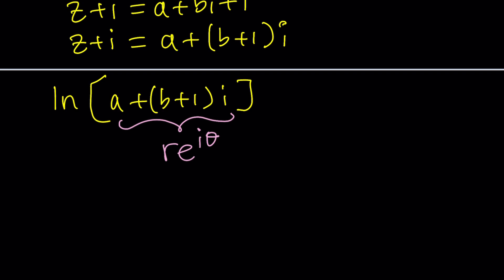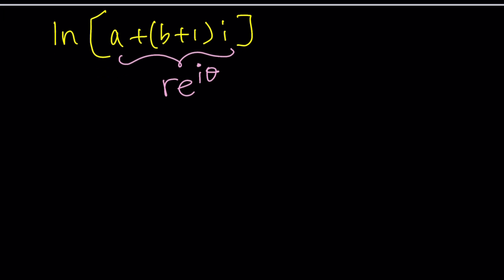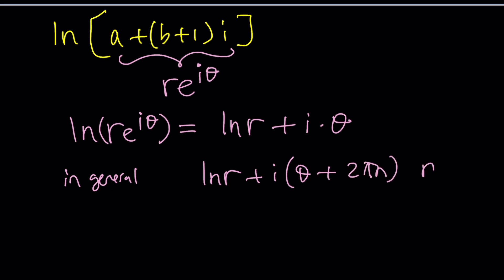E is Euler's number because Euler is awesome. He is the awesomest in my opinion. So how do we turn this into that polar form and what happens if we do? First let's look at what happens with the natural log. If you natural log a polar form, this becomes ln r plus i times theta.